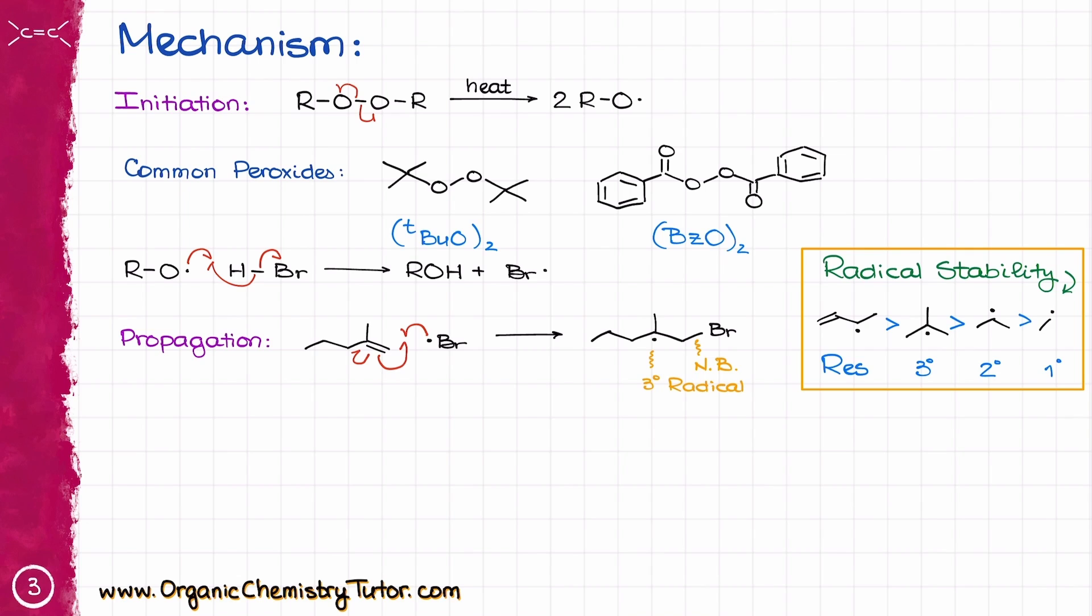primary radicals are actually not science fiction. They do exist, you can easily form them, well comparatively easily, and they are significantly more stable than the corresponding carbocations. So primary radical is an okay thing to have.